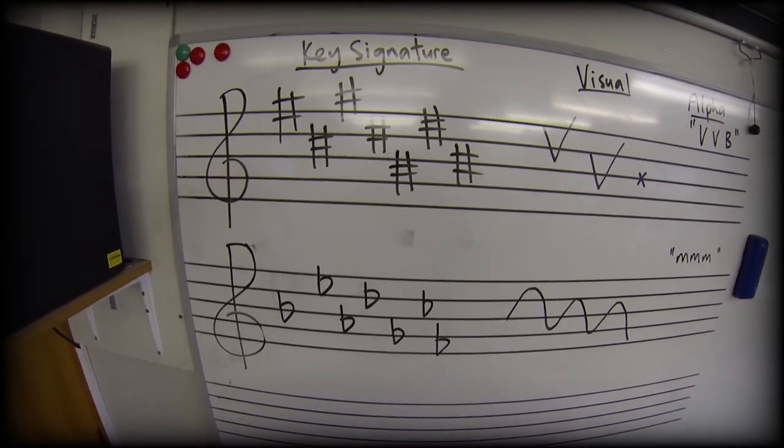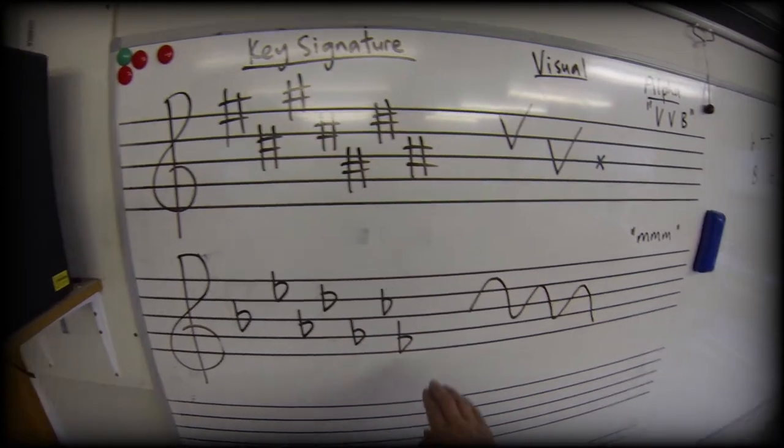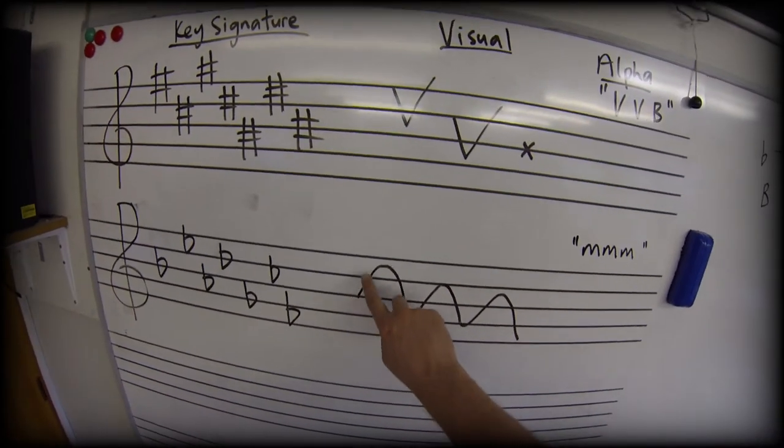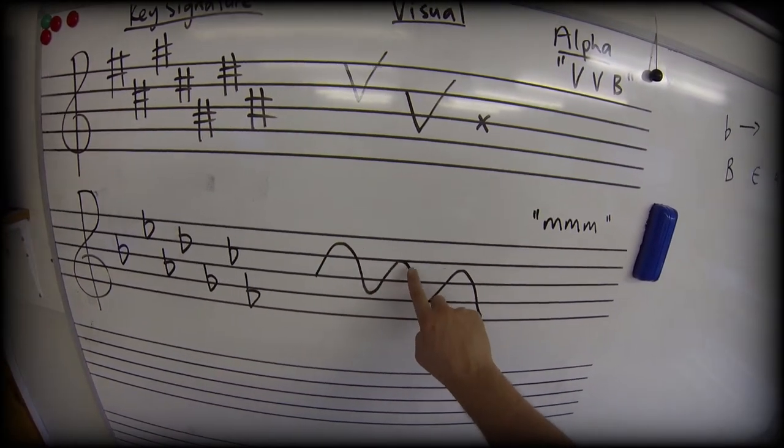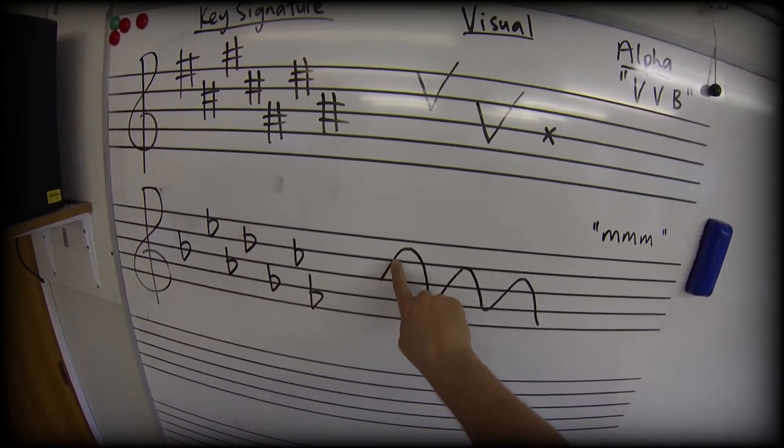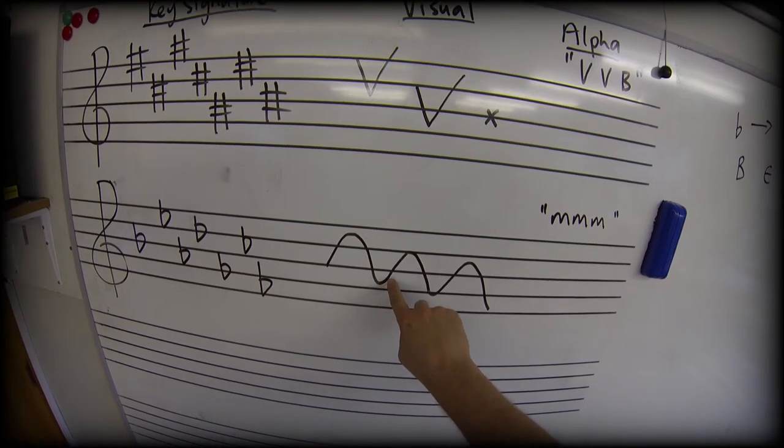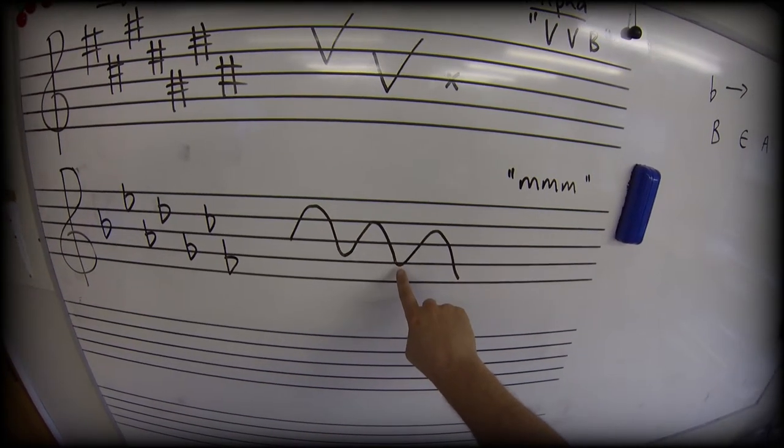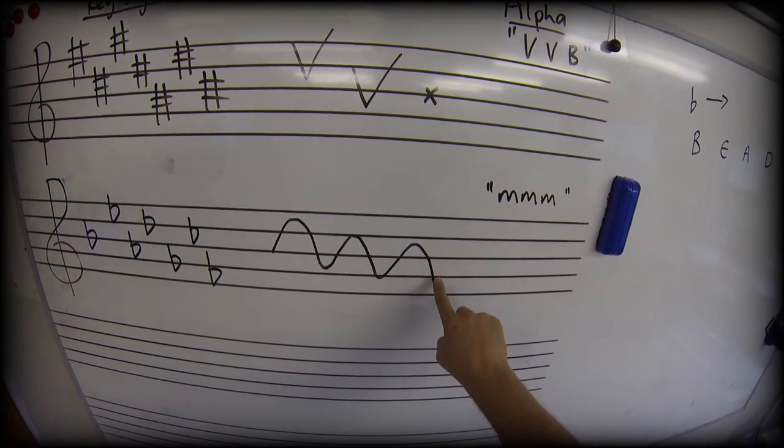What visually does that look like? Well I reckon it looks a bit like a number of letter M's all joined together. We start on the B, we go up to the E, down to the A, up to the D, down to the G, up to the C, down to the F.